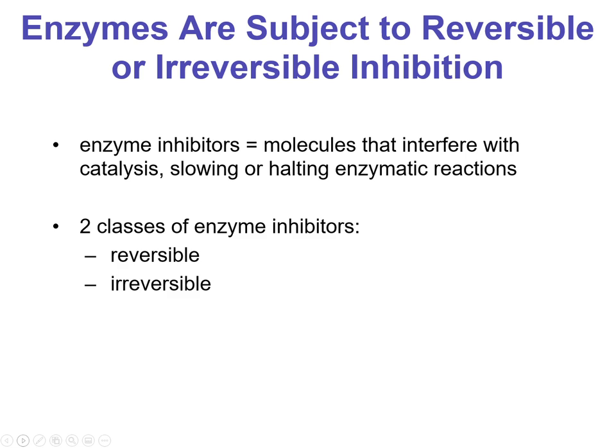Another powerful tool we can use are inhibitors, which helps you understand an enzyme better. If you can build something that inhibits an enzyme, that means you understand its mechanism. Oftentimes the drugs that we use are inhibitors. Inhibitors are just molecules that interfere with catalysis, and there are two classes we're going to talk about: reversible and irreversible, which is pretty self-explanatory.